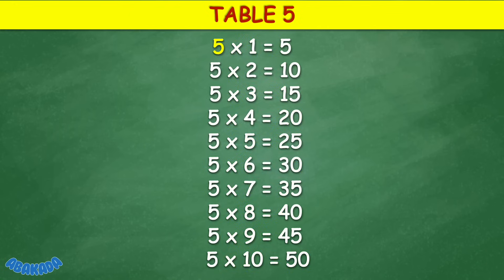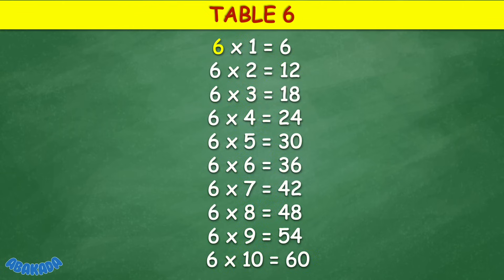Table 5: 5 times 1 equals 5, 5 times 2 equals 10, 5 times 3 equals 15, 5 times 4 equals 20, 5 times 5 equals 25, 5 times 6 equals 30, 5 times 7 equals 35, 5 times 8 equals 40, 5 times 9 equals 45, 5 times 10 equals 50.